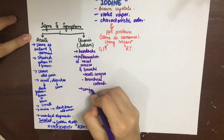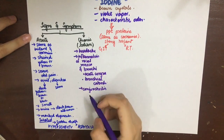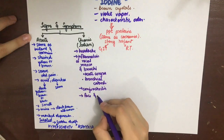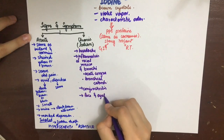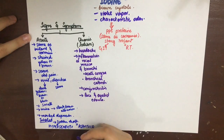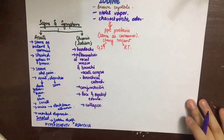Chronic iodism presents as headache, inflammation of the nasal mucosa and bronchi — called acute coryza and bronchial catarrh. Conjunctivitis can be seen, the face and eyelids are edematous, and the patient may collapse.